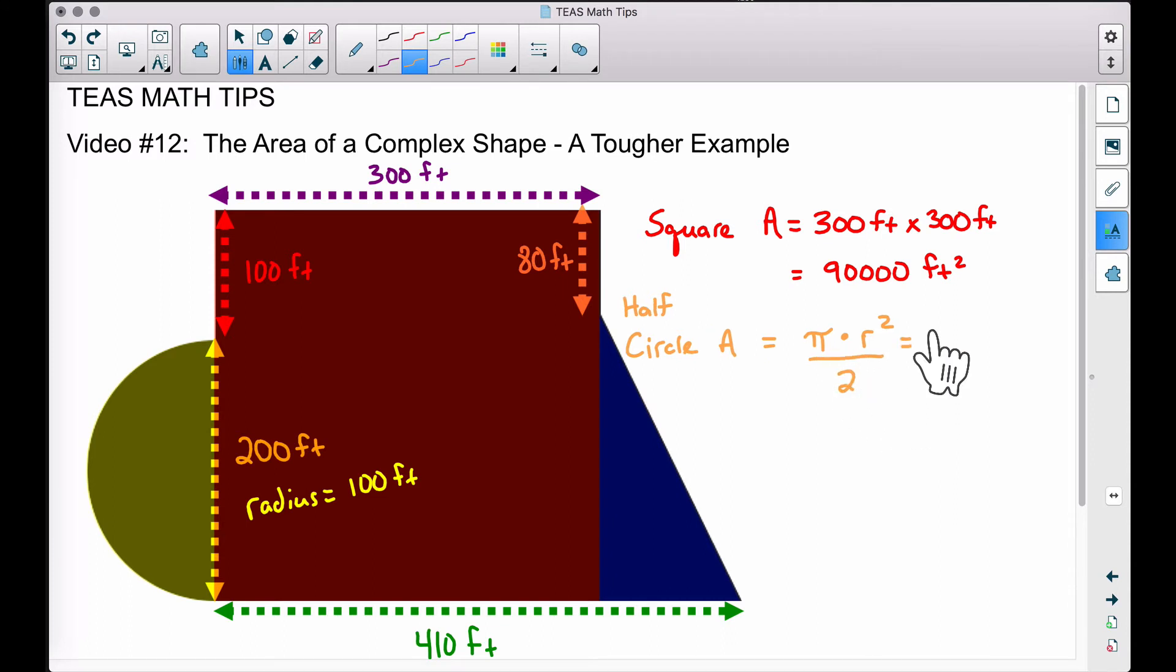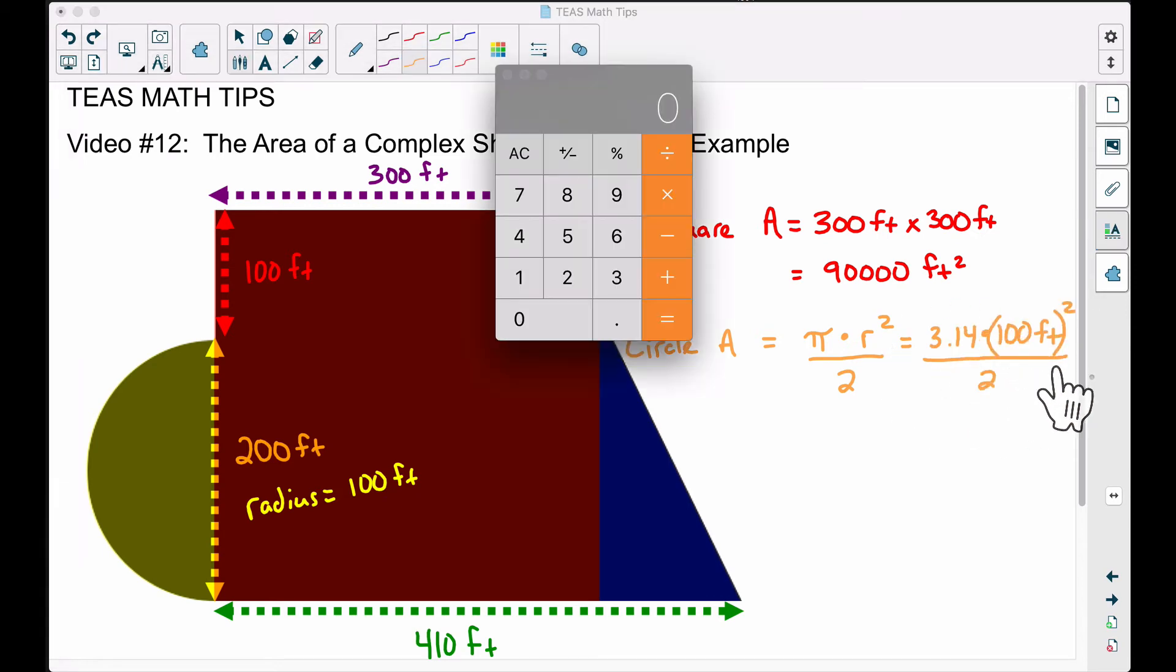Let's use 3.14 for pi, and then let's multiply by the radius squared. We said the radius was 100 feet, and then we will divide this by two. So speeding this up, doing this on the calculator, we have 3.14 times 100 times 100—again, that is 100 squared—and 3.14 times 100 squared is 31,400.